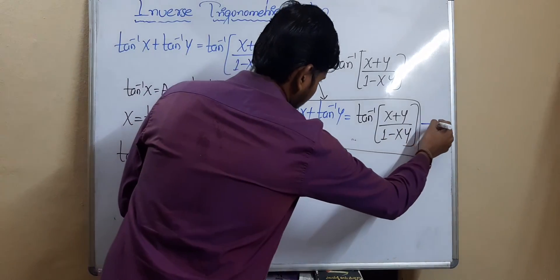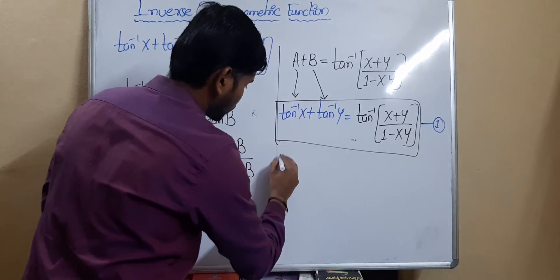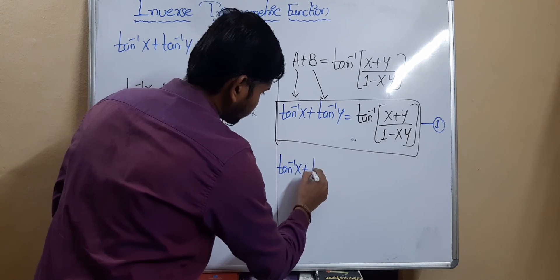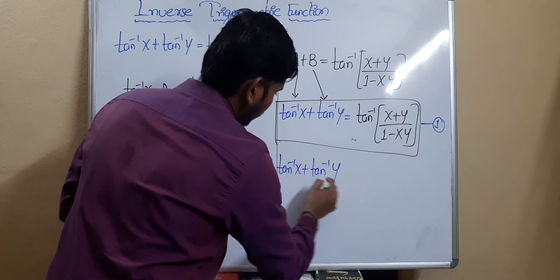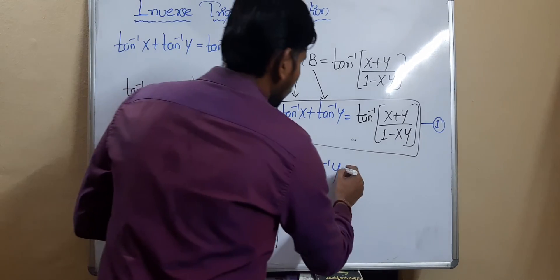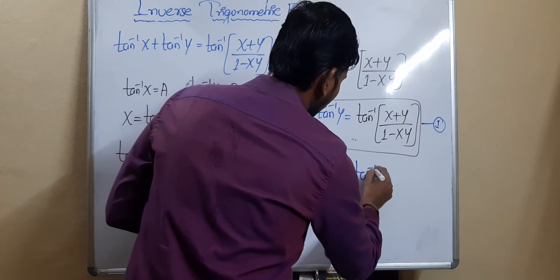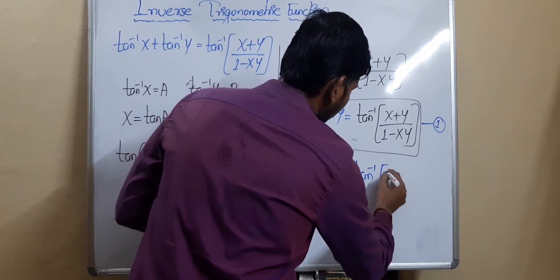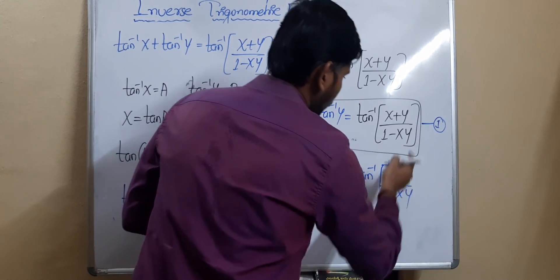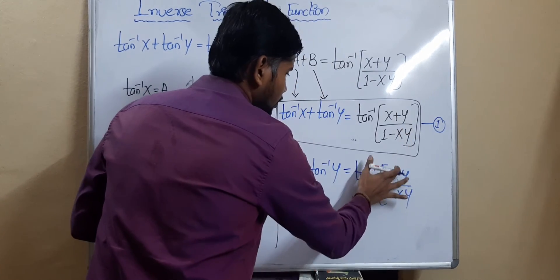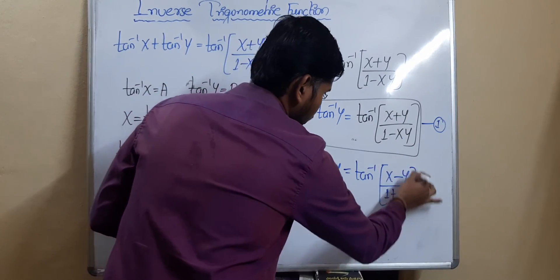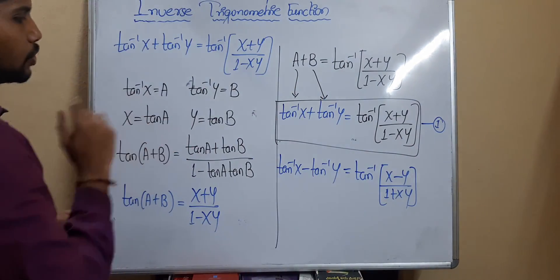Call this equation number 1. For the subtraction case, tan⁻¹(x) − tan⁻¹(y): the changes are that plus becomes minus and minus becomes plus, giving tan⁻¹((x − y) / (1 + xy)).